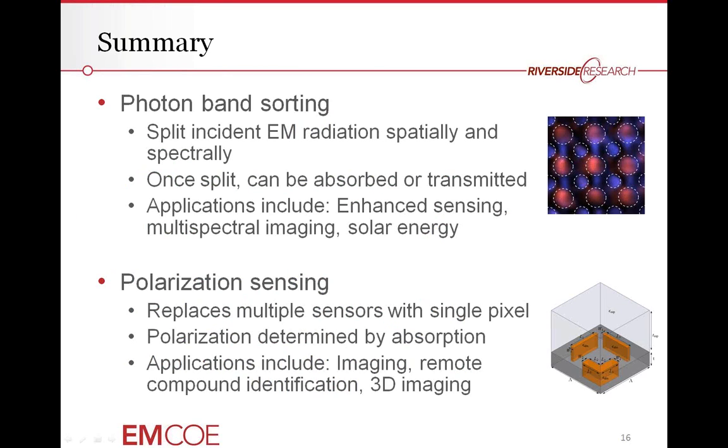And for the summary, I'll give that to Dr. Lansky. So just to summarize here, we described two different types of photon sorting structures. One is photon band sorting, which sorts by color or by frequency, where you split incident electromagnetic radiation both spatially and spectrally by frequency. Once it's split, you can absorb it, you can transmit it, you have control over it. The choice of that depends on your application. You can do enhanced sensing, multispectral imaging, solar energy, and so on. The polarization sensing, so here's one frequency, different polarizations. You replace multiple sensors with a single pixel. And the polarization is uniquely determined by the different absorption in the cavities. And the applications there include imaging and remote compound identification, 3D imaging. And I just would like to add that we have worked collaborating with the Biomed Lab here in New York to actually verify, to fabricate and verify this polarization splitting approach. And with that, I think we'll turn it back over to Ben if there are any questions.